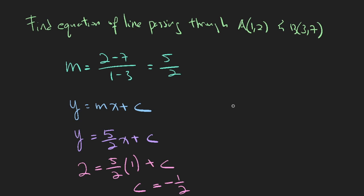So we can substitute these two values to find what is c and the y-intercept is minus half. So your equation will be y equals to 5 over 2x minus half.